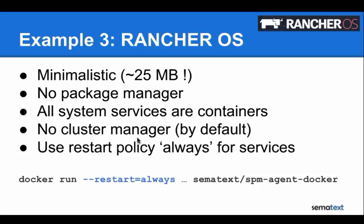The final deployment example is RancherOS. This one is very minimalistic — only 25 megabytes. It has no package manager by default — all system services are containers, including the system services that RancherOS has already running. There's no cluster manager by default, though you can install Kubernetes or Mesos. It's very lean. To run a service, you simply set restart=always — meaning when the machine boots it restarts this Docker image — so in that way we can start the monitoring agent on every reboot to make sure it's running.